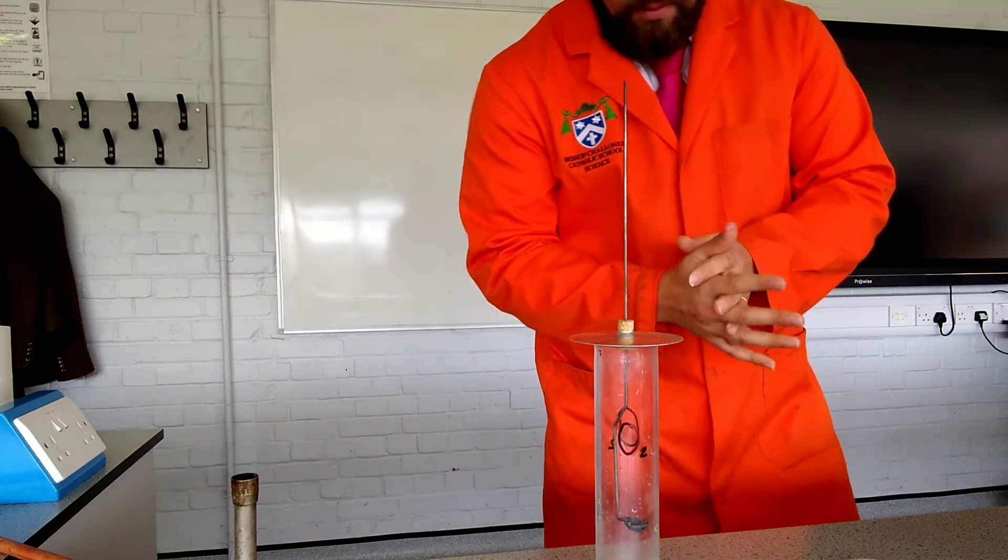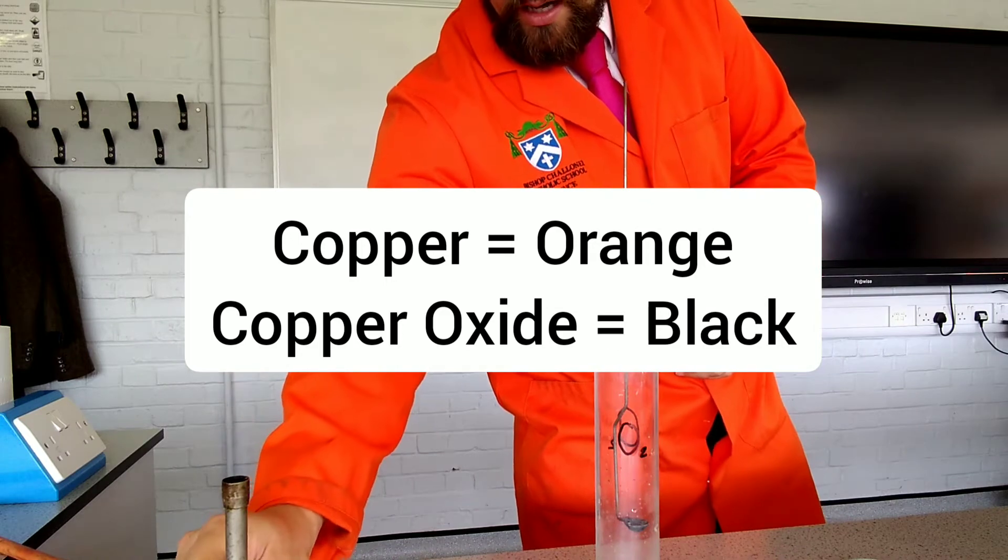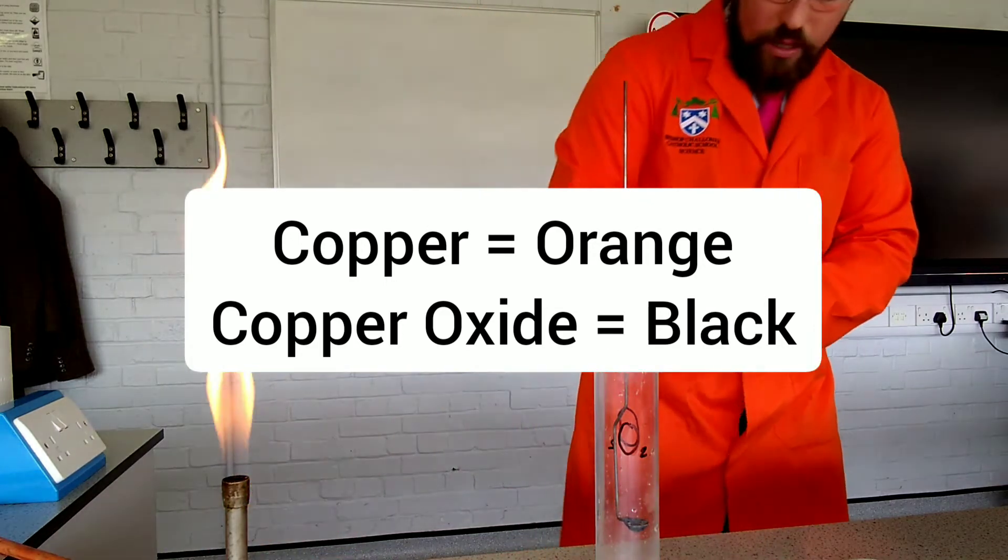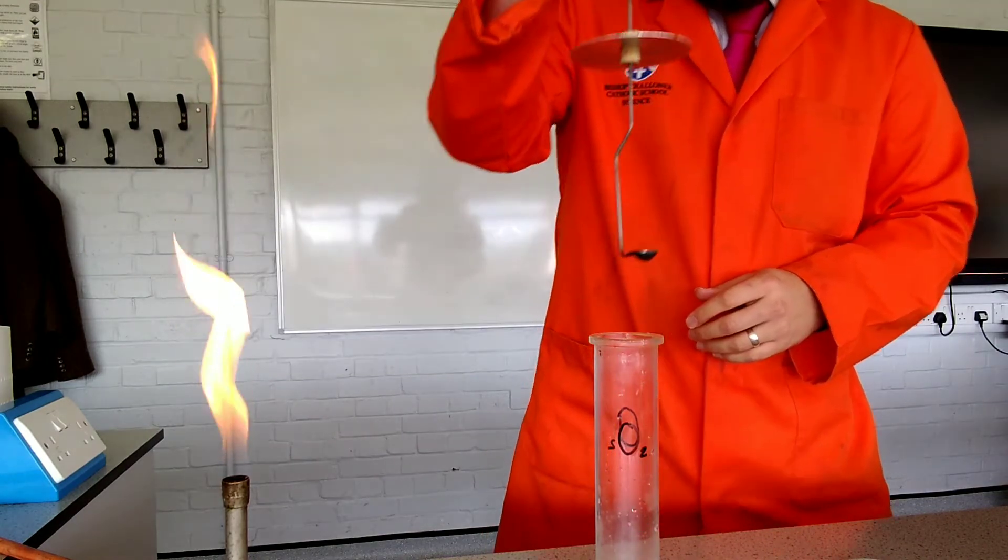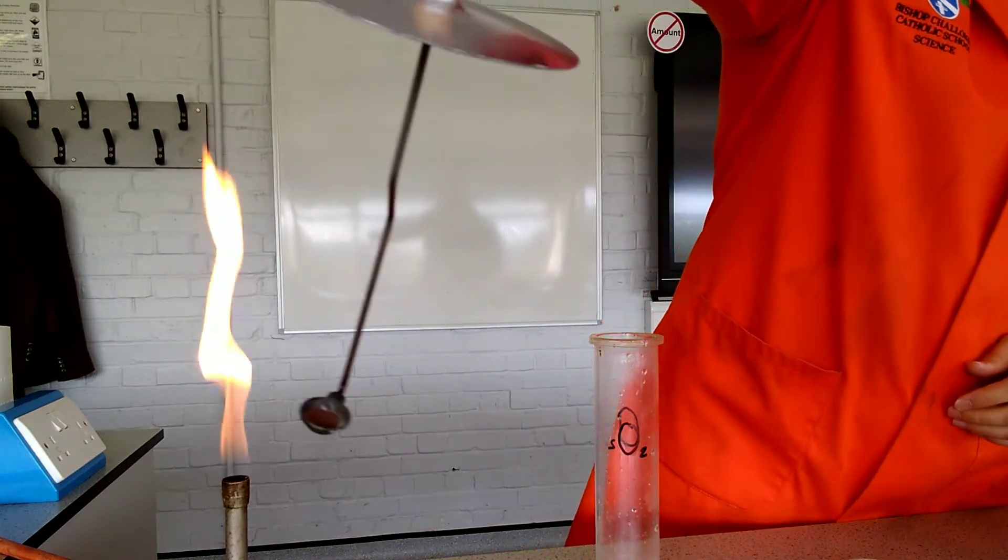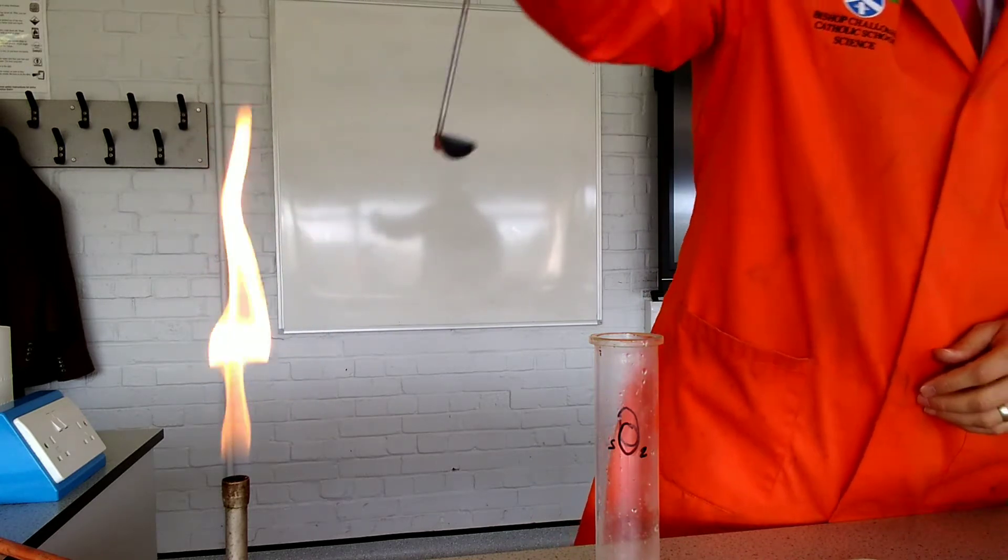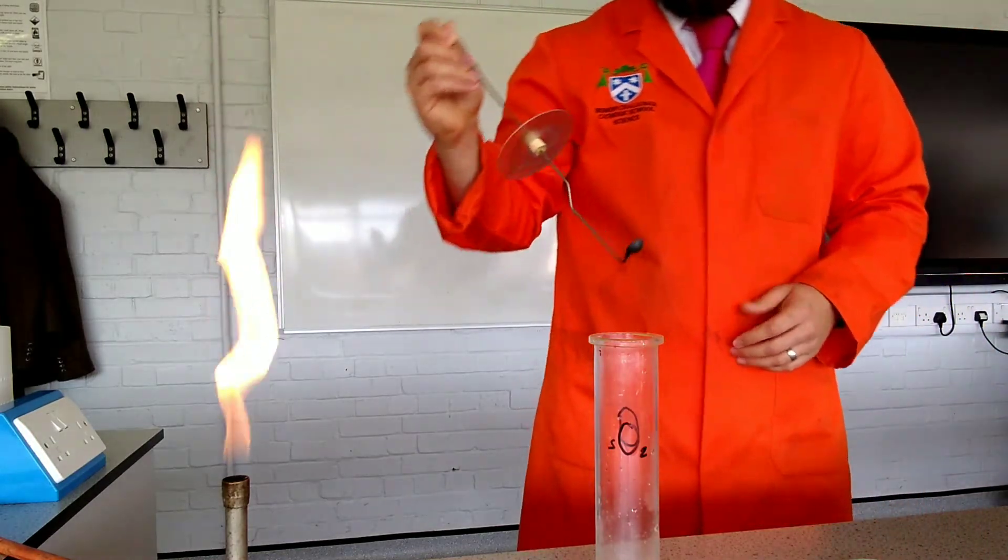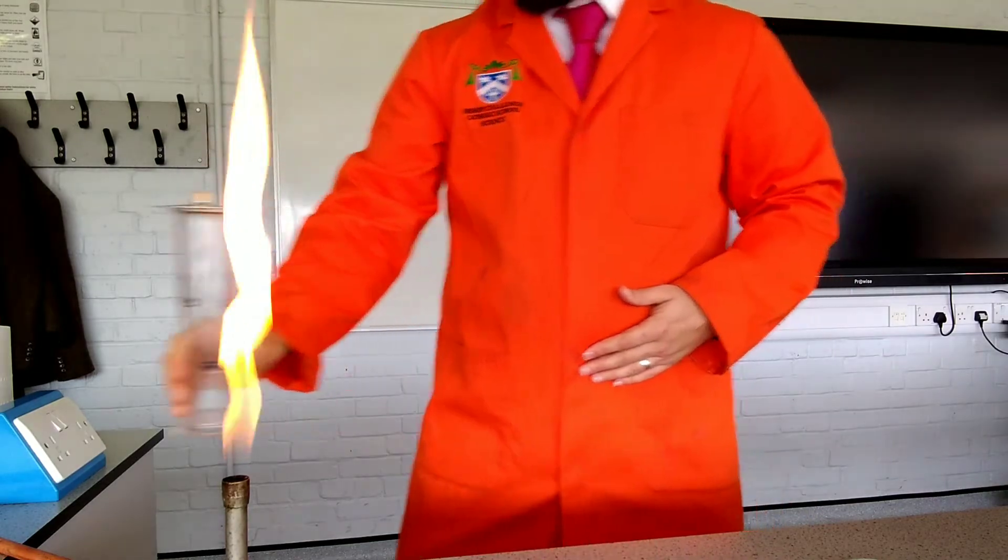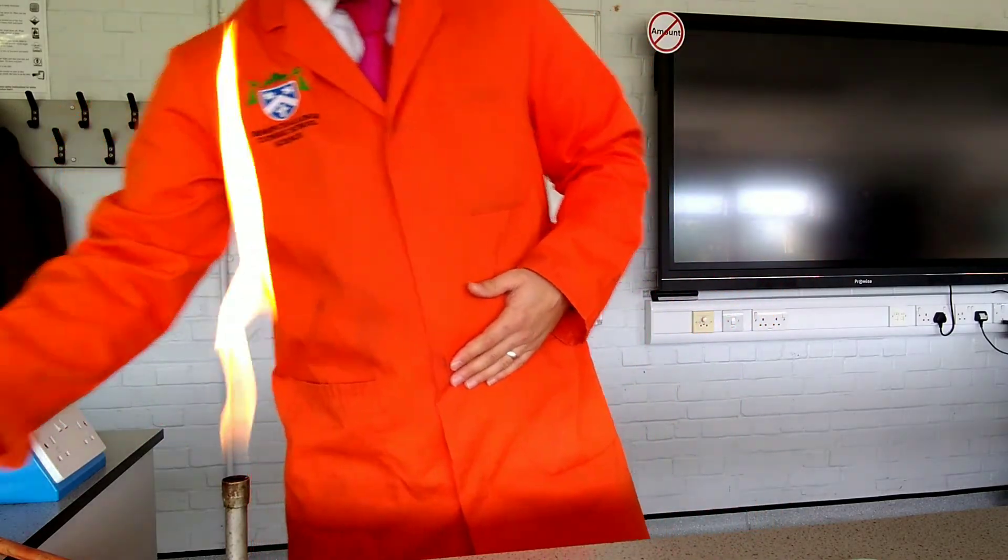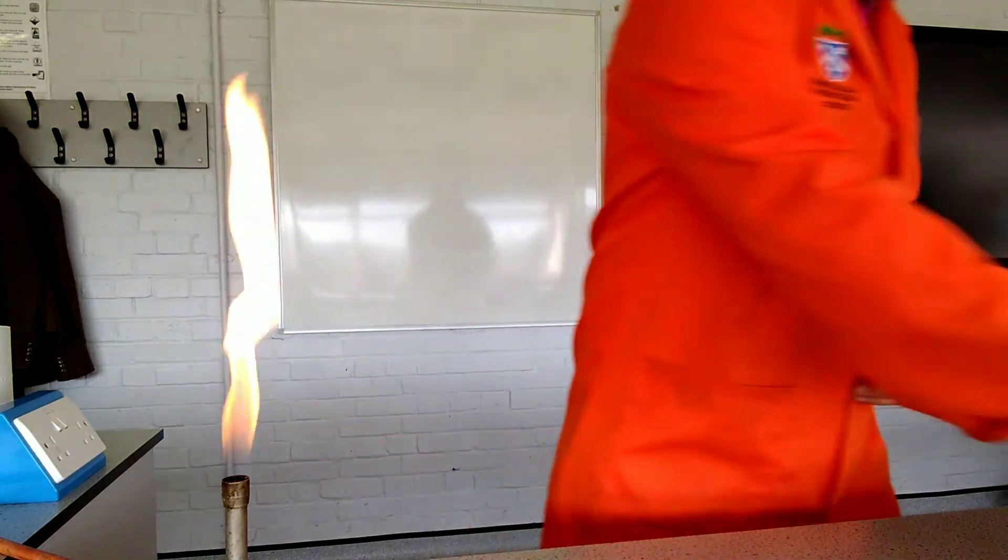So copper is pretty unimpressive. It does react, and it reacts with the oxygen here. Now, copper doesn't burn in oxygen. That copper we started with was nice and orange, and this copper we've ended up with is blackened. So copper and oxygen, pretty unimpressive. It doesn't burn in oxygen, but it will react with the oxygen to produce copper oxide, which is black in color.